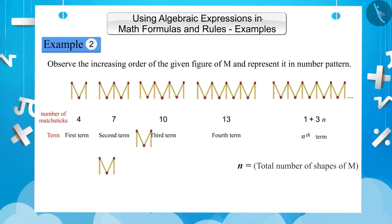Many times, seeing the two shapes of M, we misunderstand the number of matchsticks as 4 plus 4 instead of 4 plus 3. And in the increasing order also, we keep making the mistake which gives us a wrong number pattern.